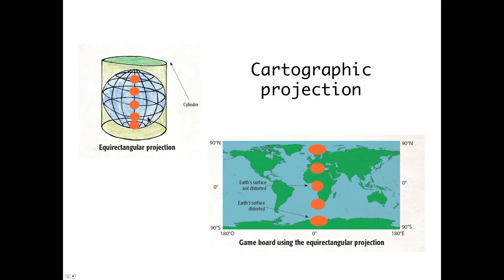Taking disks of similar size, located at different places on the Earth, the orange disks here. The projection will create greater distortion in the disks which are closer to the poles, stretching them in an east-west direction. Those near the equator, on the other hand, are not deformed.